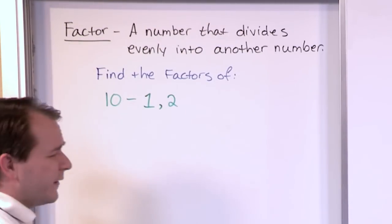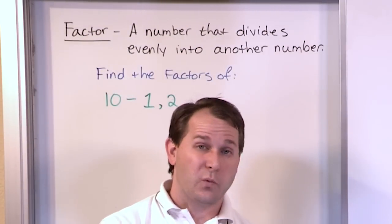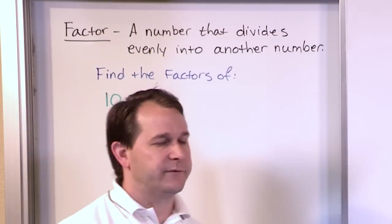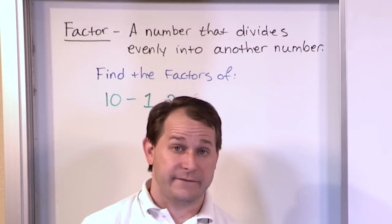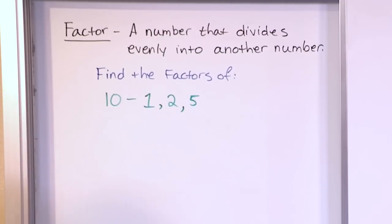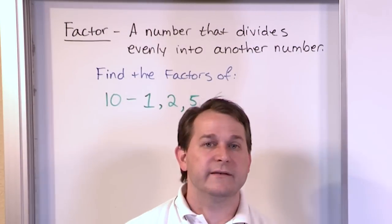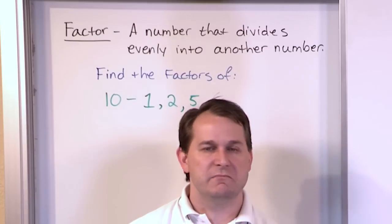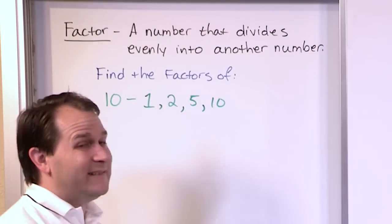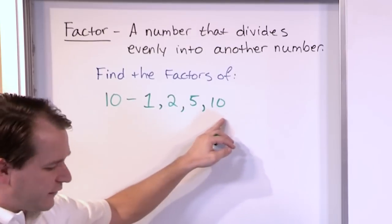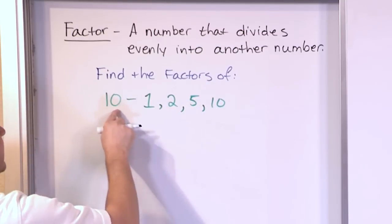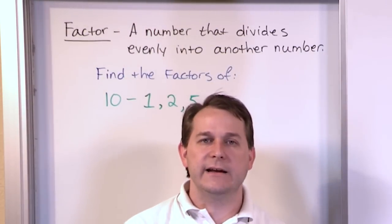Is 4 a factor of 10? No — 4 times 1 is 4, 4 times 2 is 8, 4 times 3 is 12, so there's no way to divide 4 into 10 evenly. But 5 is a factor of 10 because 10 divided by 5 is 2. Continuing on: 6, 7, 8, and 9 cannot be divided into 10 evenly. But 10 can be divided into 10 because 10 divided by 10 is 1. So the factors of the number 10 are 1, 2, 5, and 10 — all numbers that divide evenly into 10 with nothing left over.